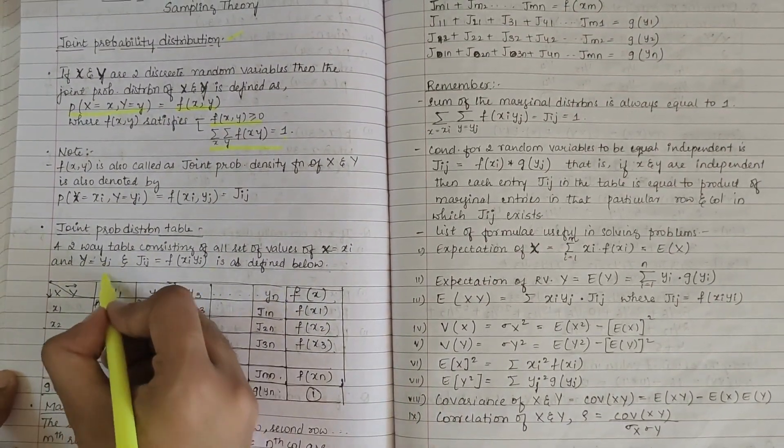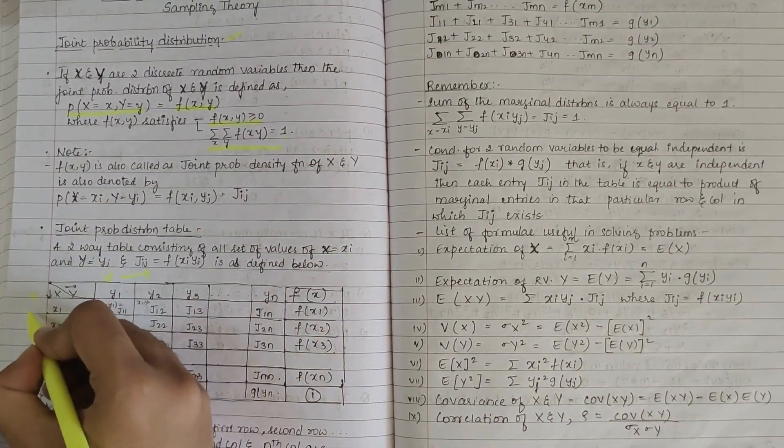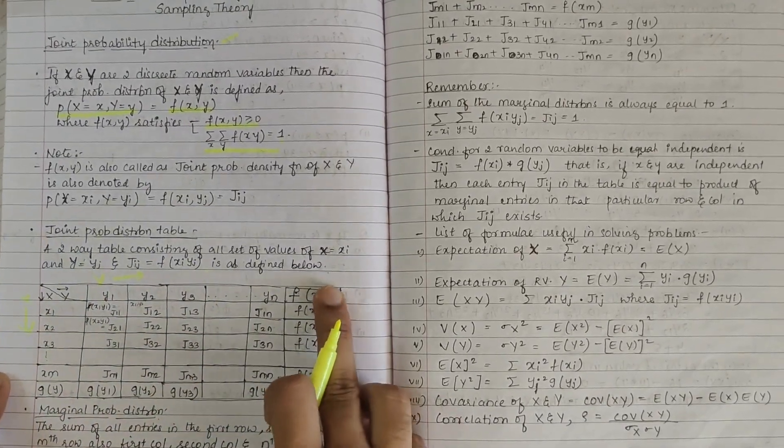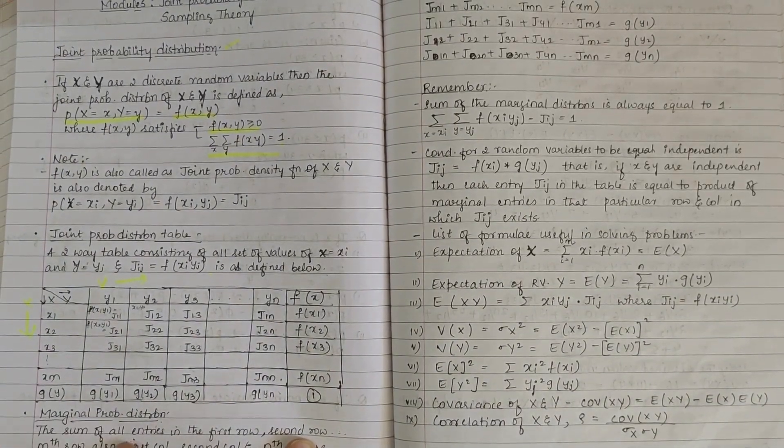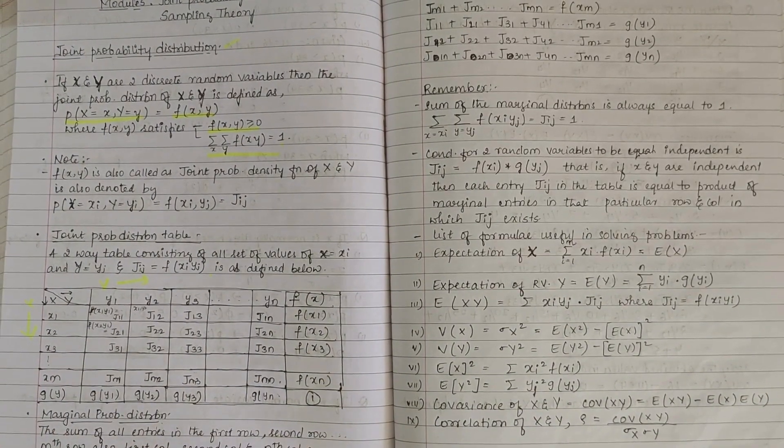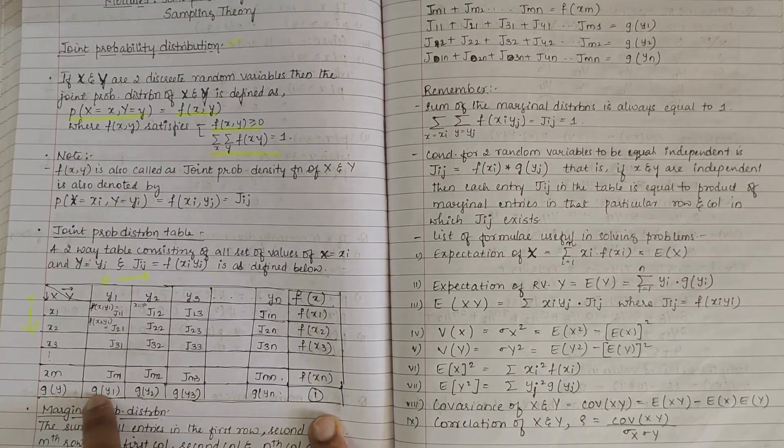This side you have all the Y values here, and this side you have all the X values. And here, f(X) and g(Y) are called as marginal probability distribution. So these are all the marginal probability values.